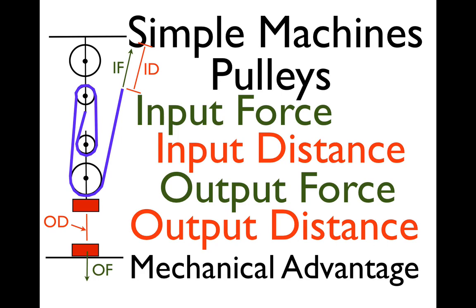In today's video, I am going to go over the following terms for simple machines and how they relate directly to pulleys, one of the most common kinds of simple machines, especially if you're in school. We have the input force, the input distance, the output force, the output distance, and the mechanical advantage. Those are the five terms we're going to go over.